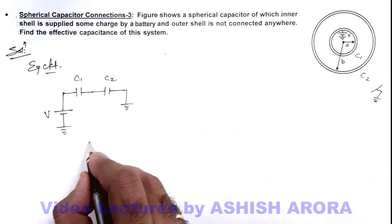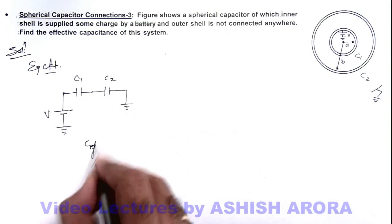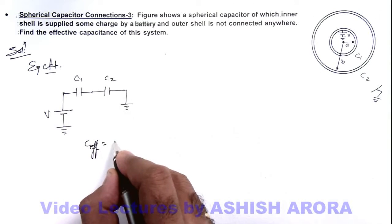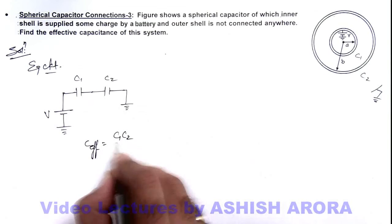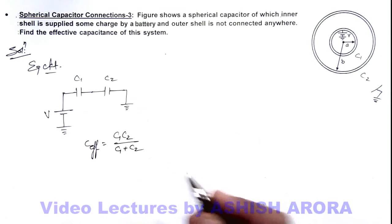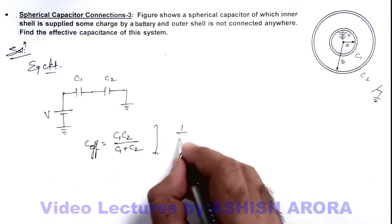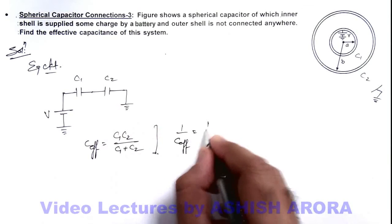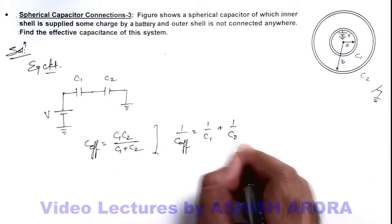So here, directly we can write the effective capacitance of this system will be given by C1C2 over C1 plus C2. Or we can calculate it by series combination: 1 by C effective equals 1 by C1 plus 1 by C2.